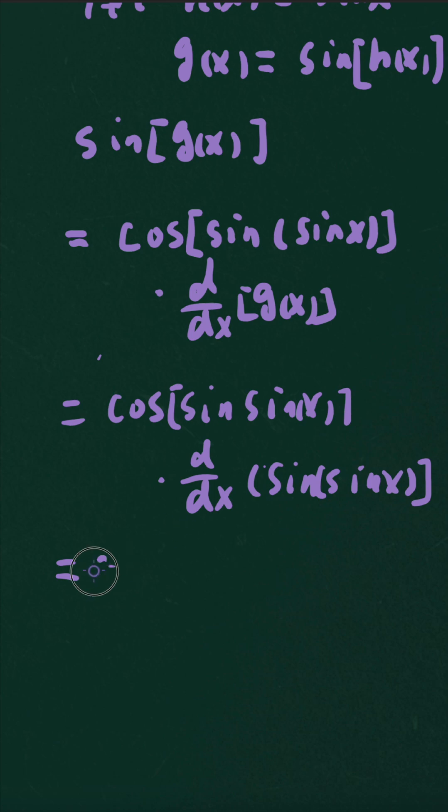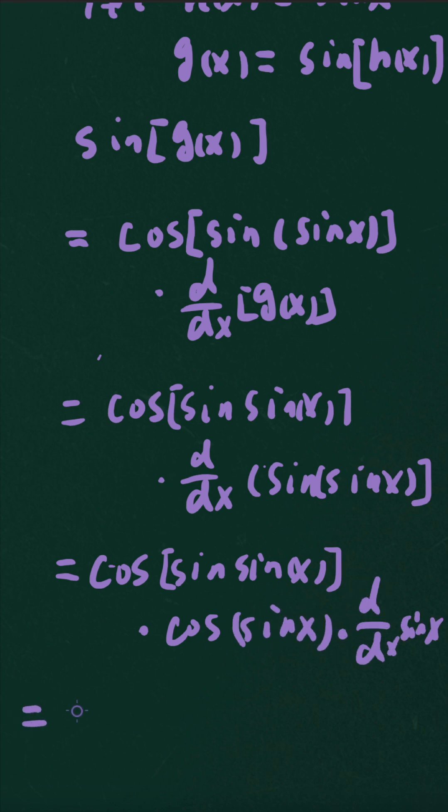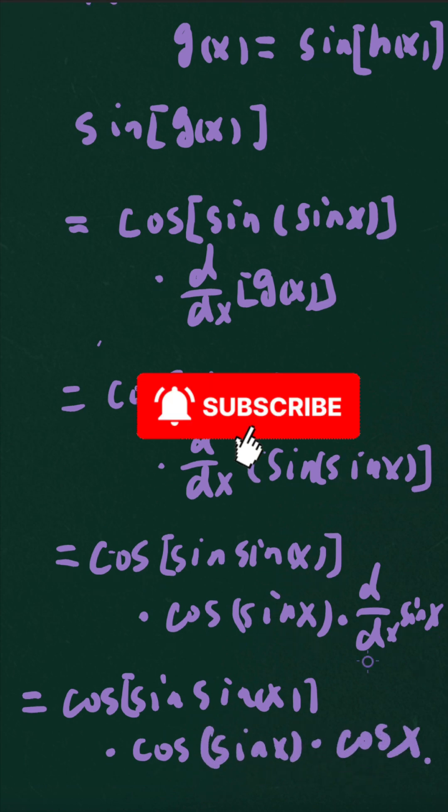And then we have to unpack this part by using the formula again. So which is equal to cosine(sine(sine x)) times the derivative of this whole thing as another g(x), another layer. So which is cosine(sine x) times the derivative of sine x. And then the final answer is cosine(sine x) times the derivative of sine x, which is cosine x. I'll see you next time. Take care.